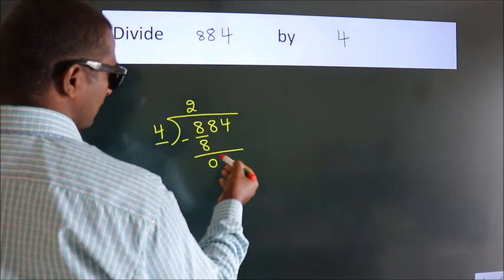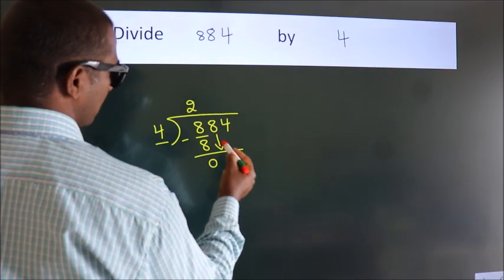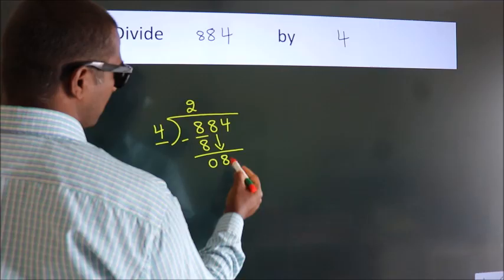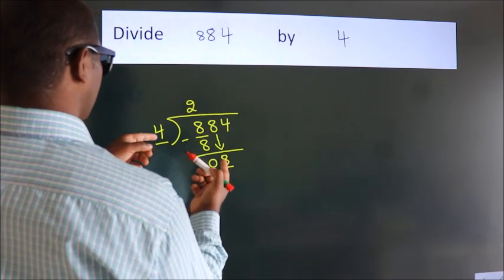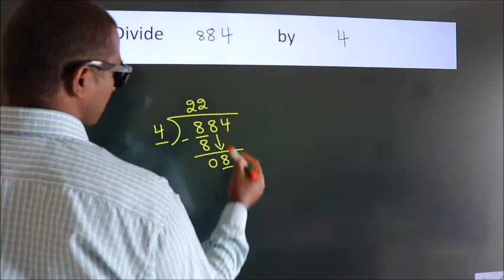After this, bring down the beside number. So, 8 down. When do we get 8 in the 4 table? 4 twos, 8.